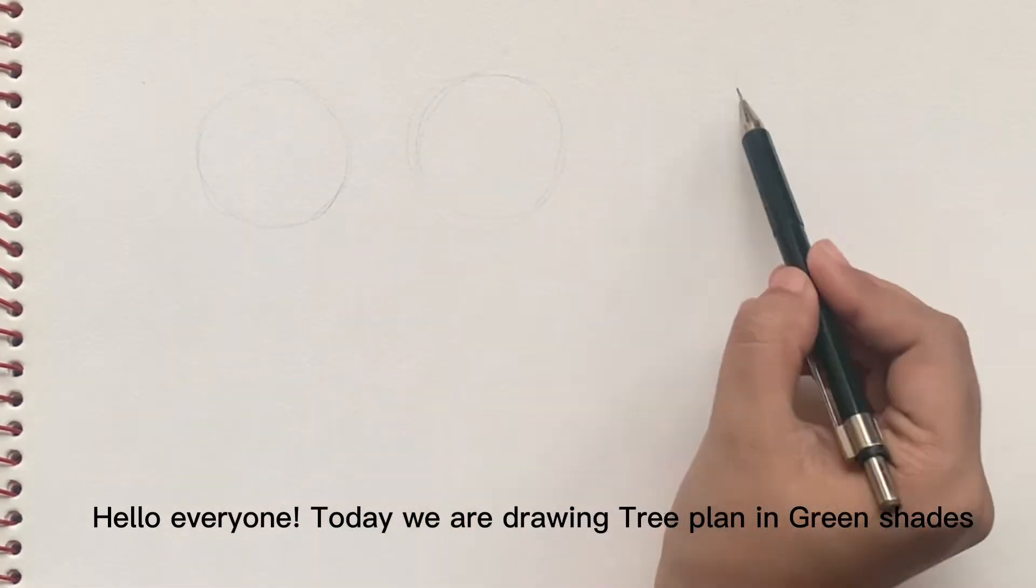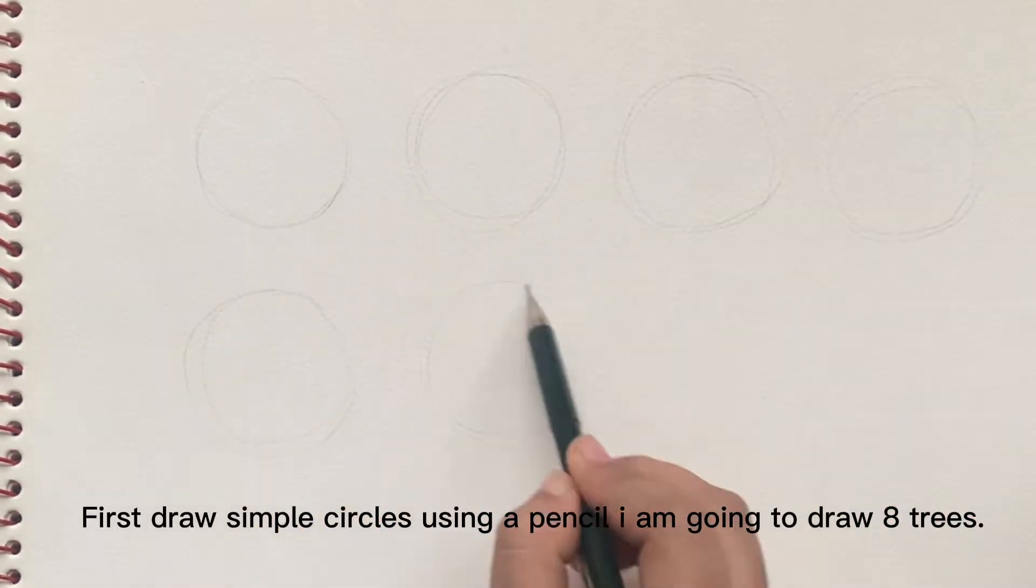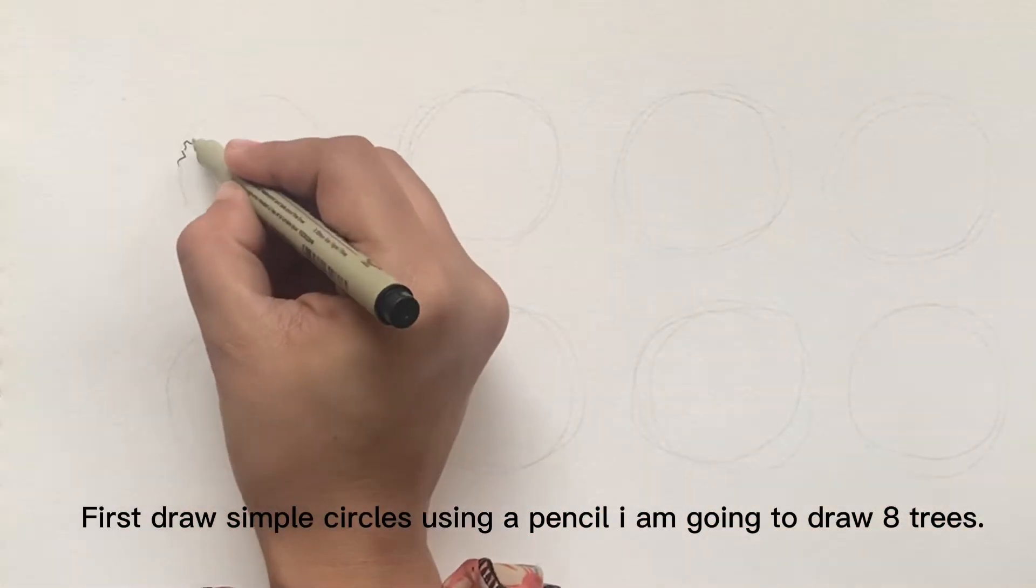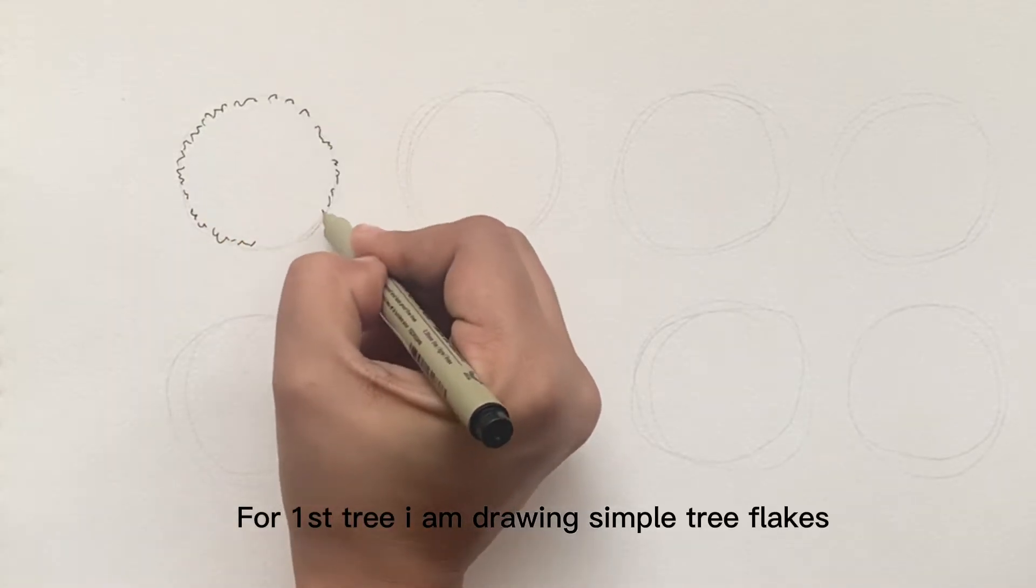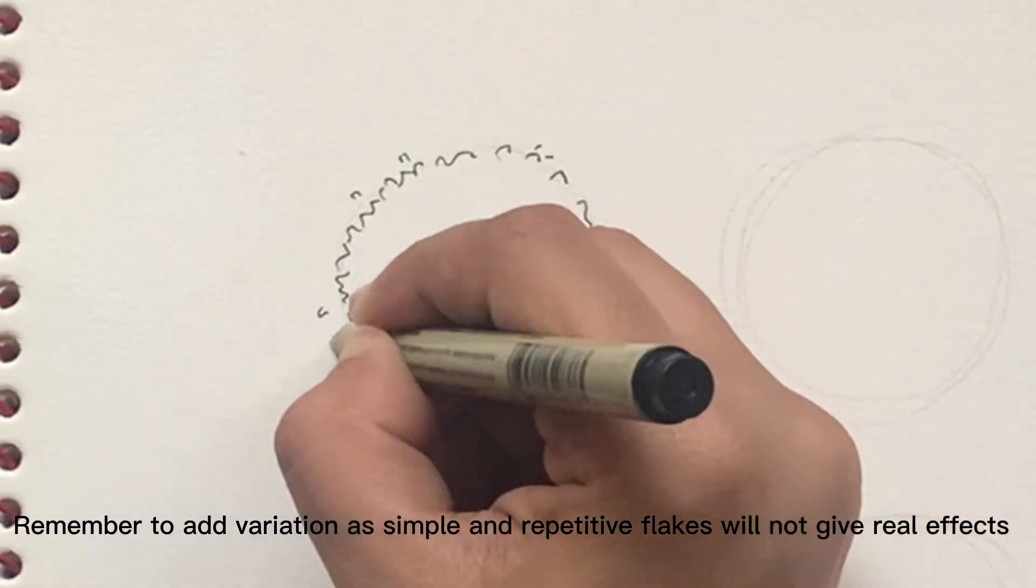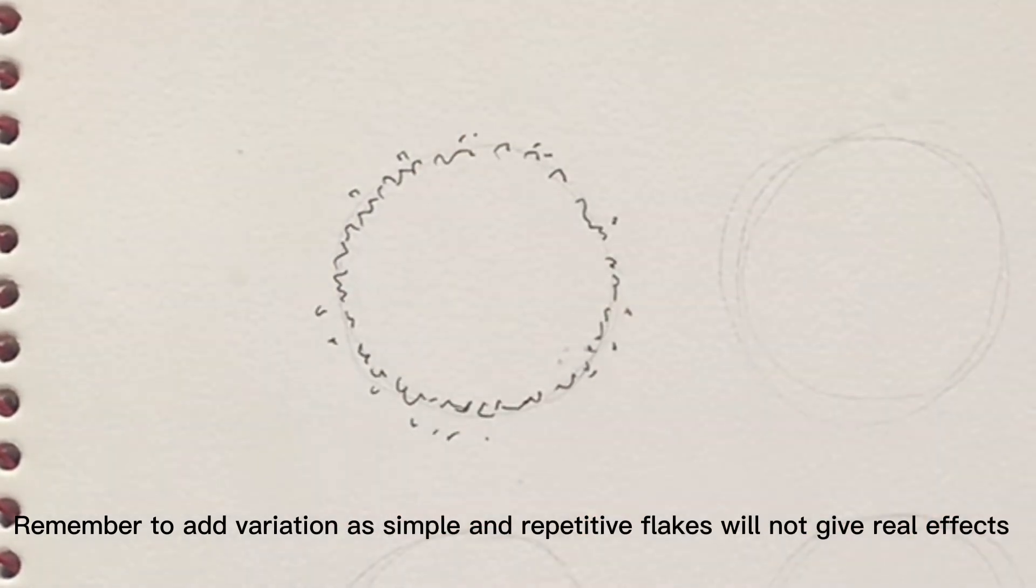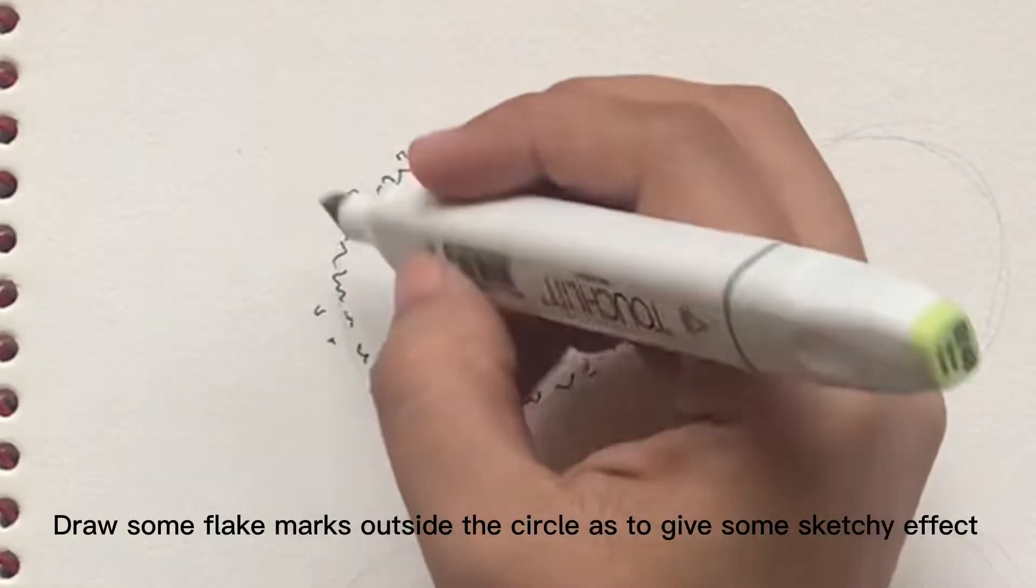First draw simple circles using a pencil. I am going to draw eight trees. For the first tree I am drawing simple tree flakes. Remember to add variation as simple and repetitive flakes will not give real effects. Draw some flake marks outside the circle to give some sketchy effect.